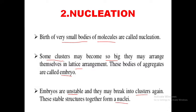The second mechanism is nucleation — the birth of very small bodies of molecules. Some clusters may become so big they arrange themselves in a lattice arrangement, that is a structure. These bodies of aggregates are called embryos, and this is the earlier stage. Embryos are unstable and may break into clusters again. These stable structures come together to form a nucleus.